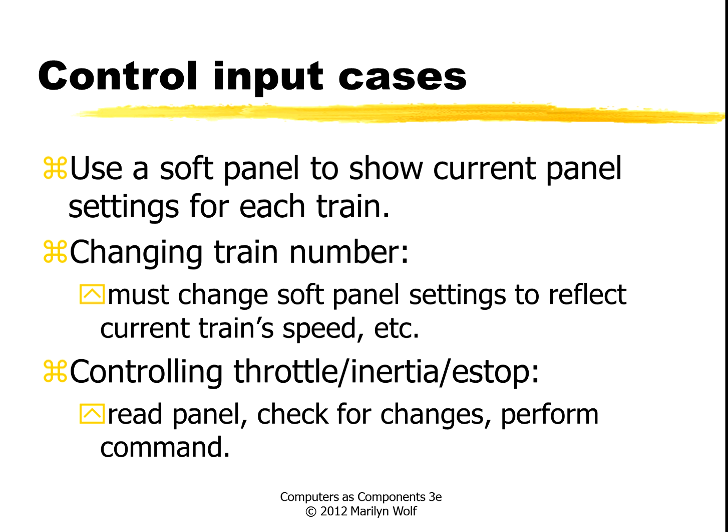Let's look at some cases for the control panel input. Let's assume that we have a soft panel here — we don't have a knob for changing the train number. We have up and down buttons, and then we have a display that shows the current train.